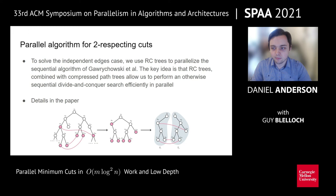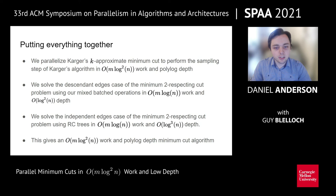Finally, we can put everything together. With the parallel k-approximate minimum cut, we can perform the sampling step of Karger's algorithm in m log squared n work and poly log depth. Once we've solved the descendant edges case of minimum 2-respecting cut in m log n work and log squared n depth using our mixed batched operations framework, we take m log squared n work in total over the log n trees. We solve the independent edges case similarly using RC trees and compressed path trees in m log n work and log cubed n depth per tree. Putting all of this together gives us an m log squared n work, poly log depth minimum cut algorithm.